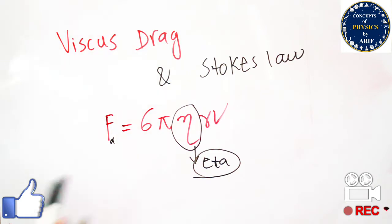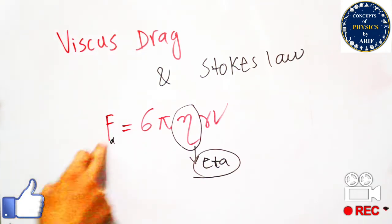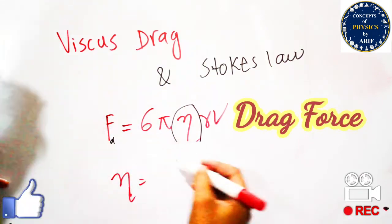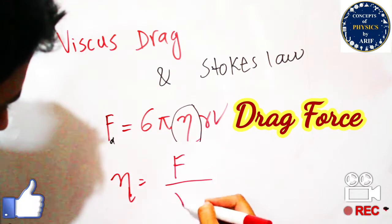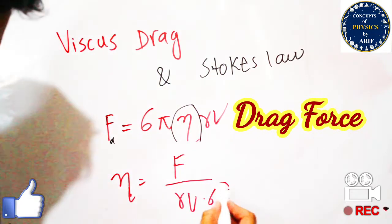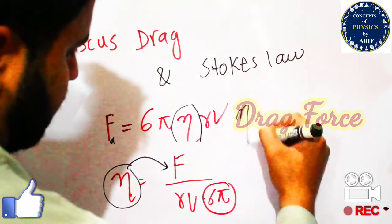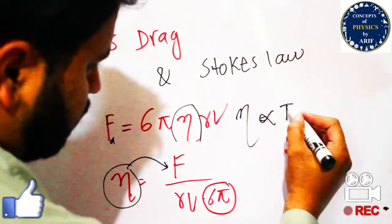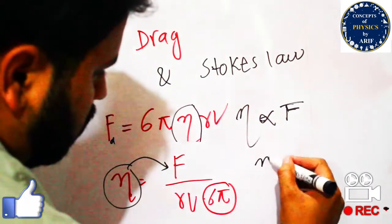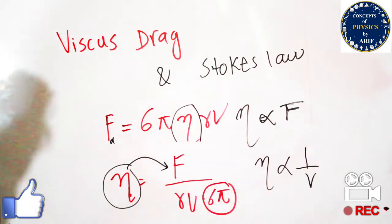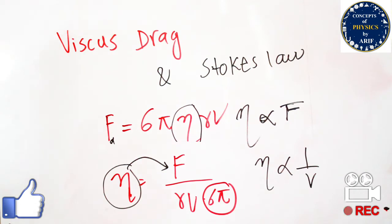We can measure the units and dimensions of the coefficient of viscosity in terms of force, radius, and velocity. The coefficient of viscosity equals force divided by r, v, and the constant 6π. The coefficient of viscosity is directly proportional to force and inversely proportional to both radius and velocity. As the velocity of the object increases, the coefficient of viscosity decreases, but the drag force on the body also increases.